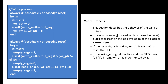Another always block handles the empty register status at posedge clock or posedge reset. If reset is high, the FIFO is empty, so empty register value should be high. Otherwise, if write enable is high, full register is low, and write PTR is not equal to read PTR, then 0 is assigned to the empty register. Another condition: if read enable is high and write PTR equals read PTR plus 1, then 1 is given to the empty register, meaning the FIFO will become empty.